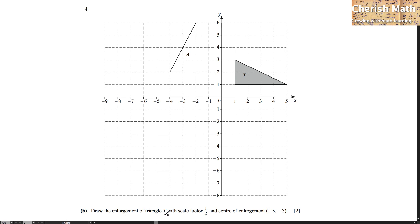Question 4 part B. Draw the enlargement of triangle T with scale factor 1 half and center of enlargement negative 5, negative 3. The first step is to spot the location of negative 5, negative 3 as the coordinate of the center of enlargement. Now, the next step is by joining each of the vertices of triangle T to the center of enlargement that we have put on a dot here.